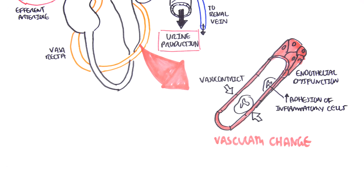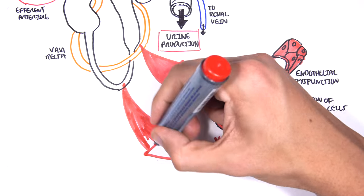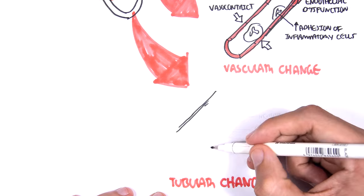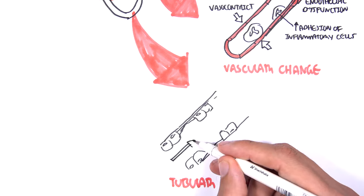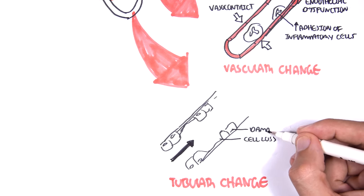The second change we see are tubular changes. So in tubular change, for example, here is within the tube of the nephron. The filtrate normally goes this way.